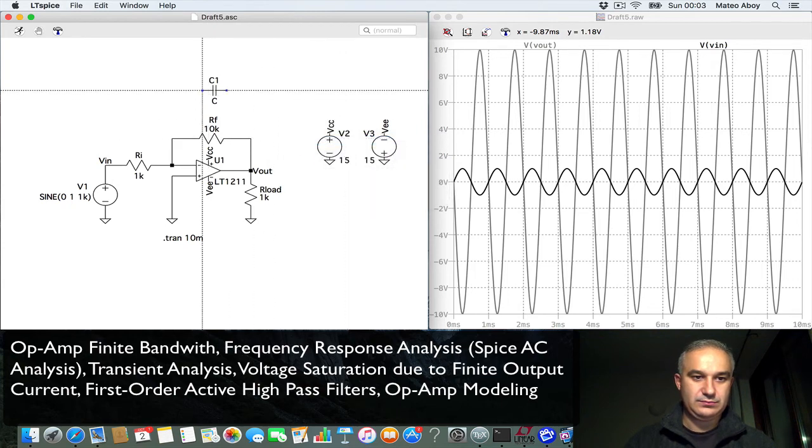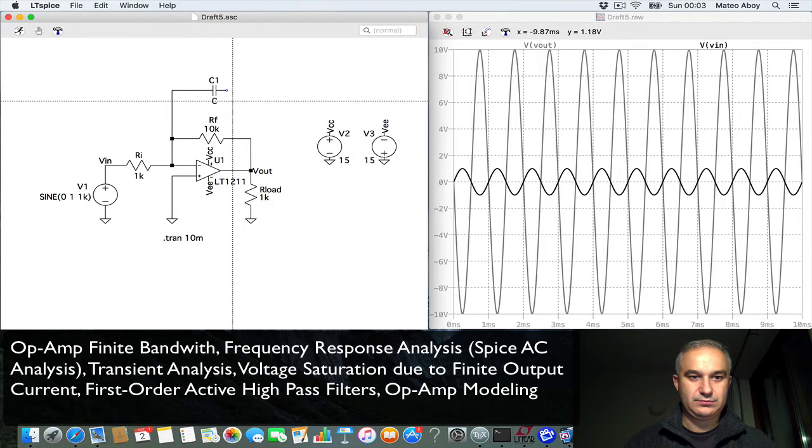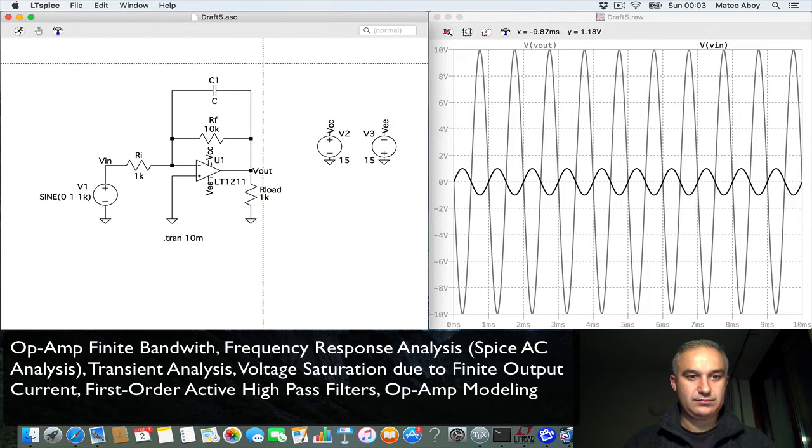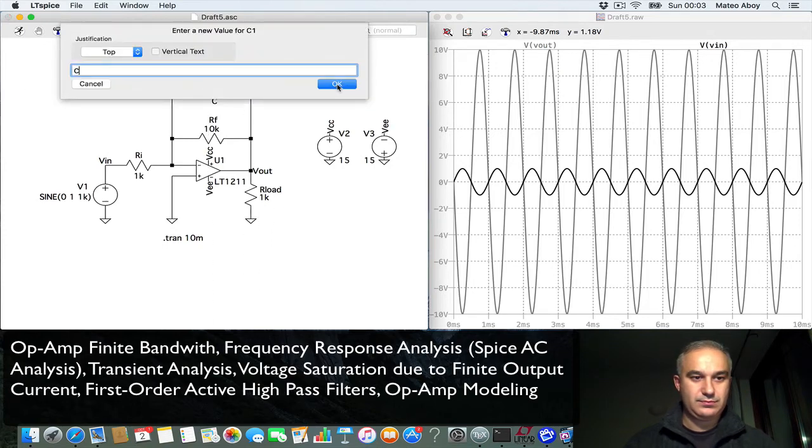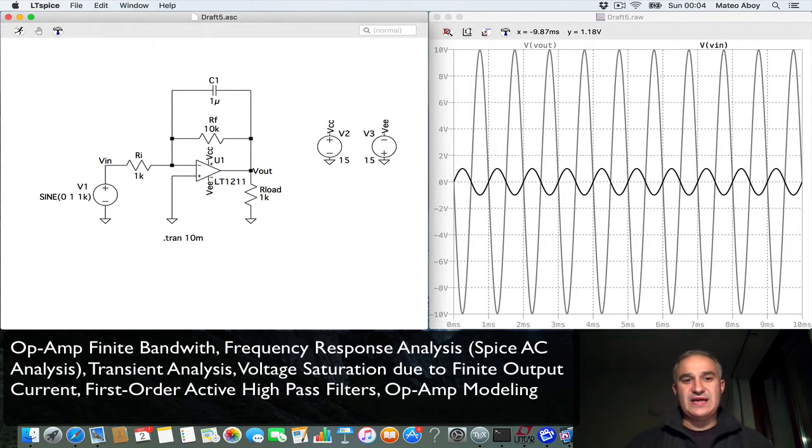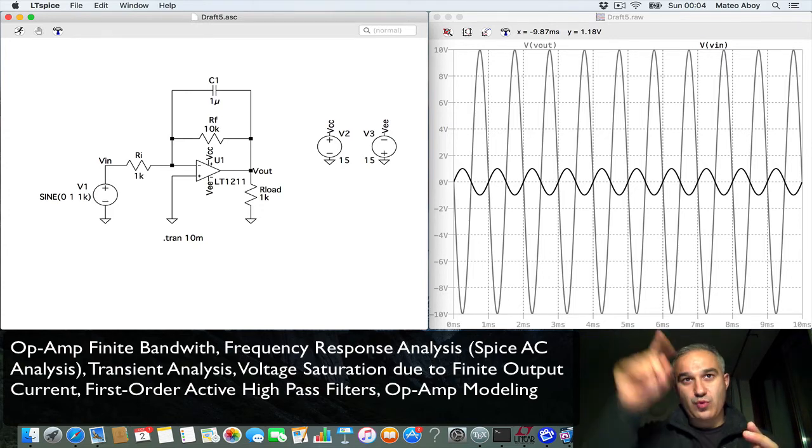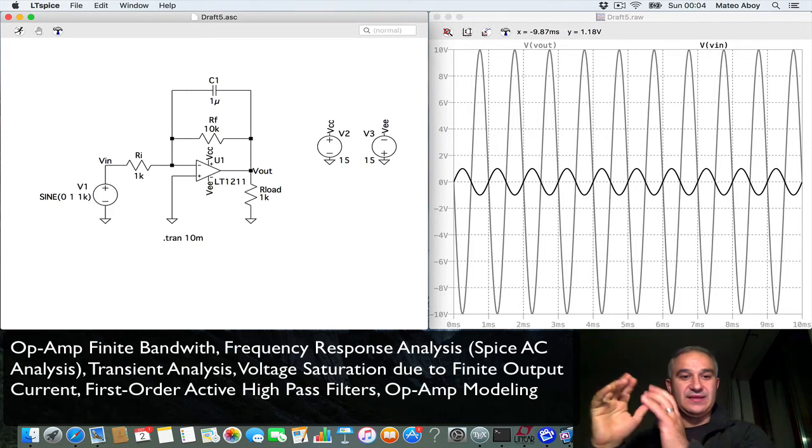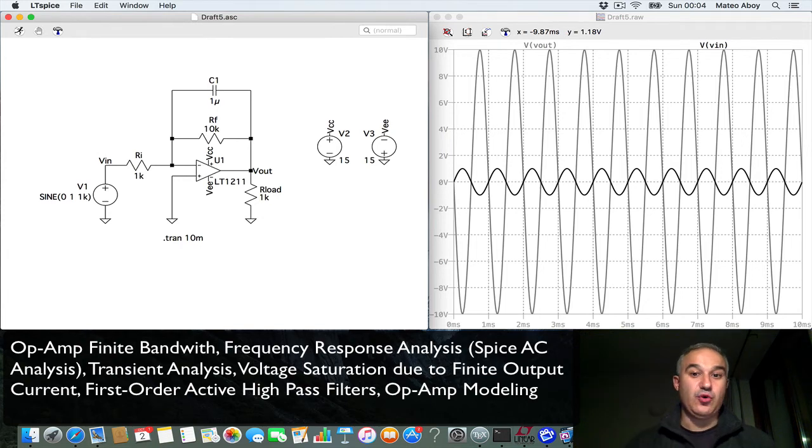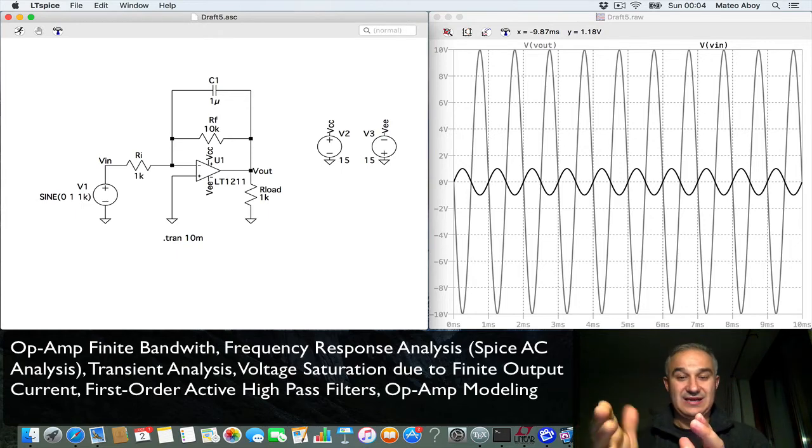So remember, this is a low-pass filter. You can see that because at low frequencies, the capacitor, 1 over j omega c, the impedance for omega equals 0 becomes an open. And so you just have the current amplifier. So at low frequencies, it behaves just like the amplifier that we are working, meaning a voltage amplifier with a gain of 10.